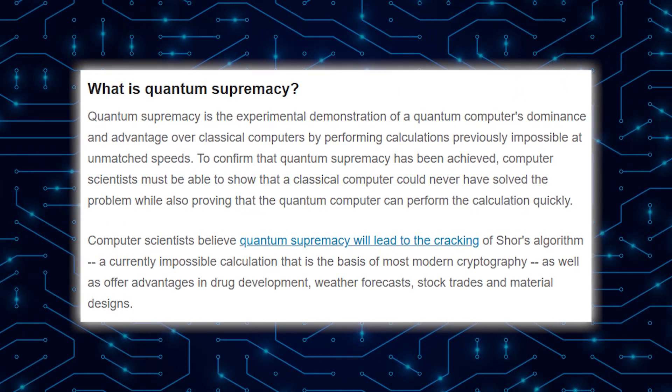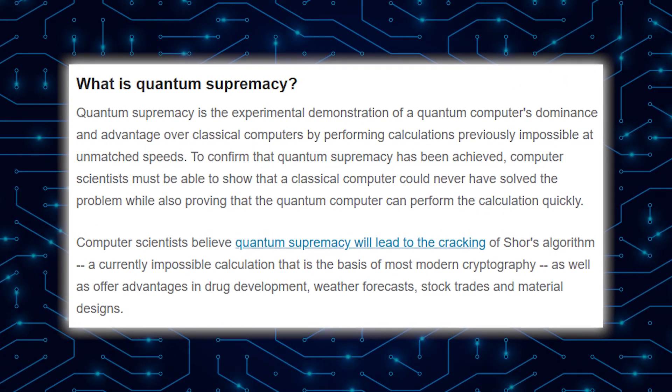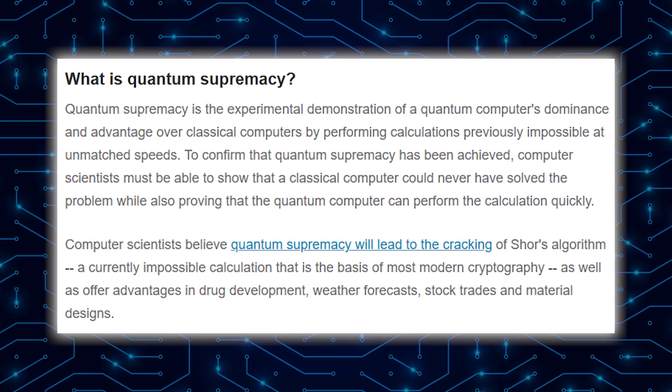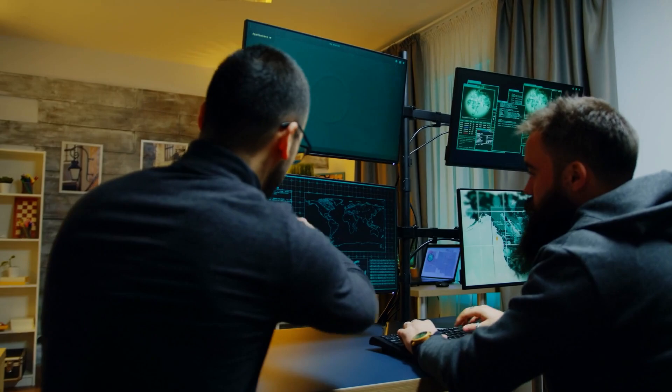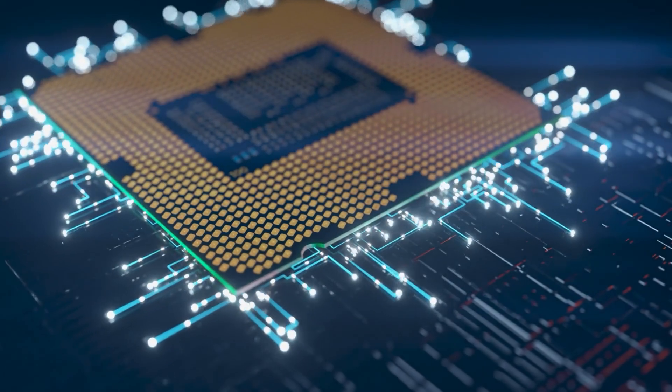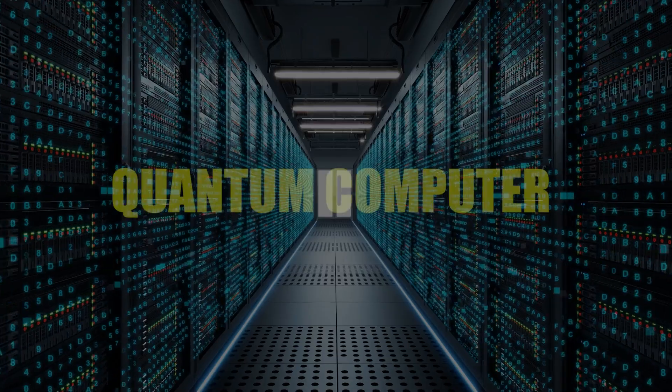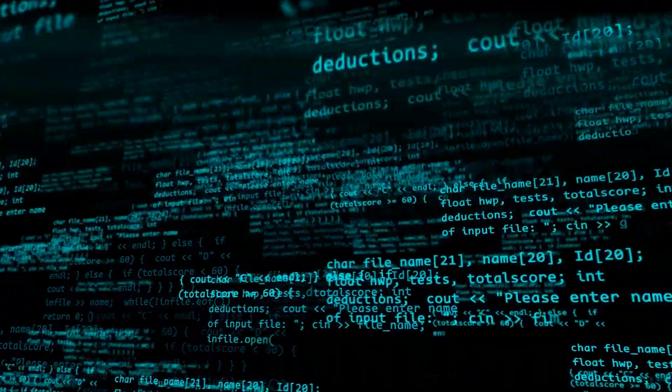What Does Quantum Supremacy Really Mean? Experimental proof of quantum supremacy shows that a quantum computer is better and more powerful than traditional computers by doing calculations faster than any other classical computer. In order to be sure that quantum supremacy has been reached, computer scientists need to show that a quantum computer can solve a problem that a classical computer could never solve, and with much greater speed.